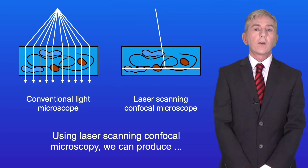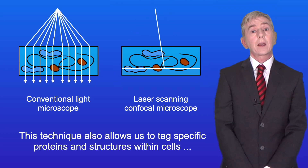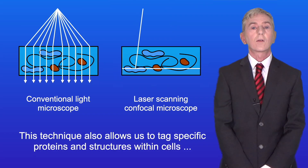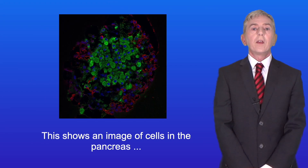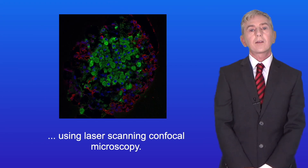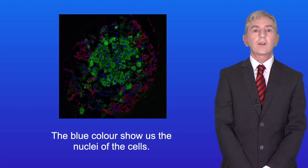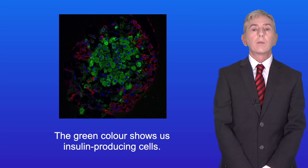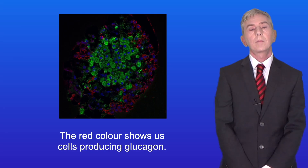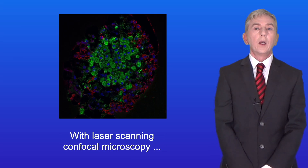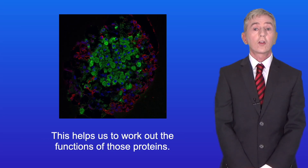Using laser scanning confocal microscopy, we can produce three-dimensional images of cells. This technique also allows us to tag specific proteins and structures within cells by using special dyes and antibodies. This shows an image of cells in the pancreas using laser scanning confocal microscopy. The blue colour shows us the nuclei of the cells, the green colour shows us insulin producing cells, and the red colour shows us cells producing glucagon. With laser scanning confocal microscopy, we can actually watch proteins moving around living cells, and this helps us to work out the functions of those proteins.